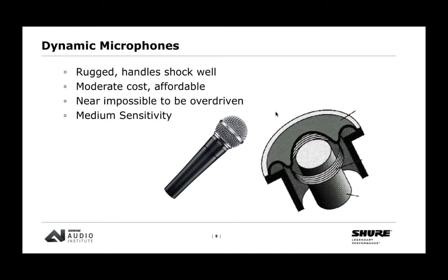The two different types of microphones we'll start with are dynamic and condenser. Dynamic microphones are rugged, handle shock very well, don't cost as much to manufacture, and are almost impossible to overdrive — they have very high SPL handling. They're also of medium sensitivity, so they're not likely to pick up unwanted noises like a running air conditioner. Something like the SM58 is a dynamic microphone that has proven itself to be extremely rugged, sounds great, and lasts a long time.